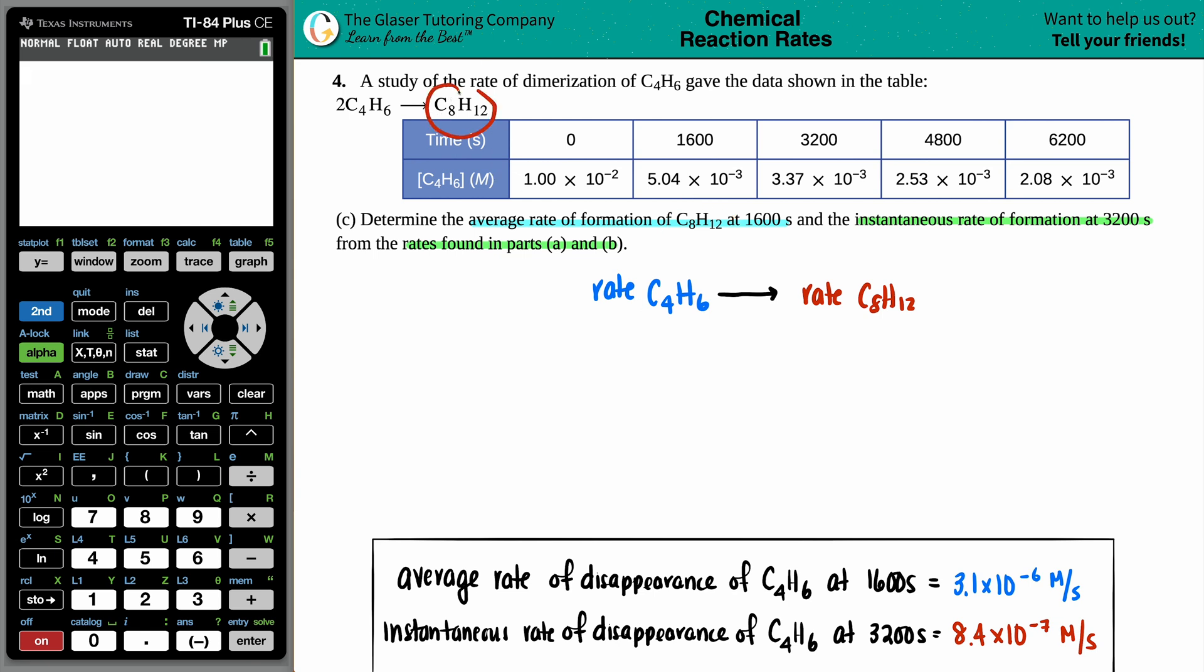Rate of formation just means that the C8H12 is forming, it's on the product side. Disappearance means this is going bye-bye, it's on the left side, it's a reactant. Of course the C4H6 should be disappearing and the C8H12 should be appearing or being formed, but the speed or the rate in which this is dropping and this is increasing we can find out.